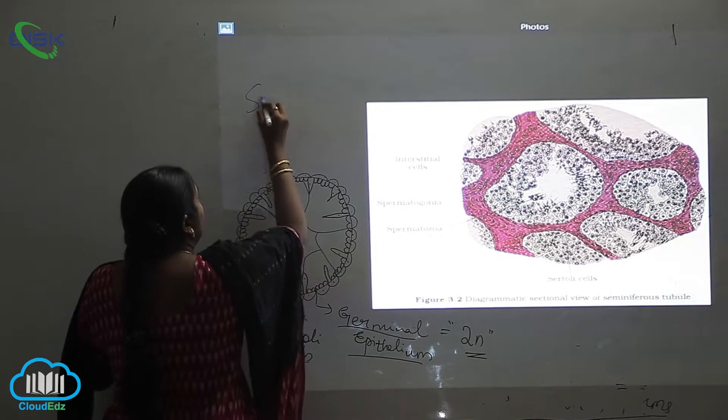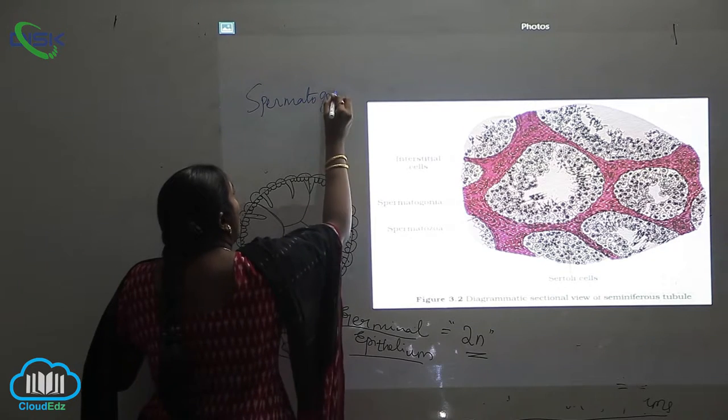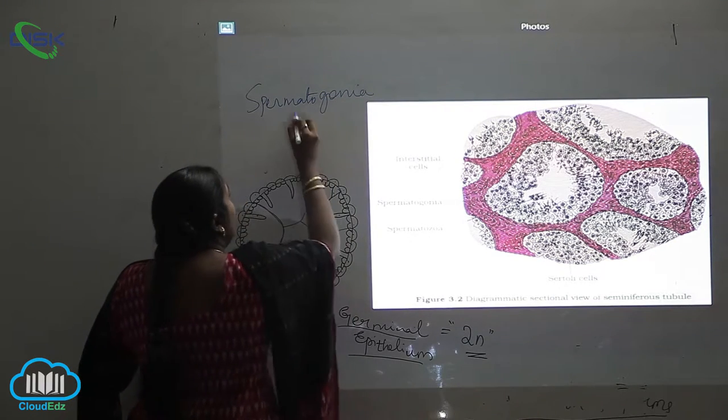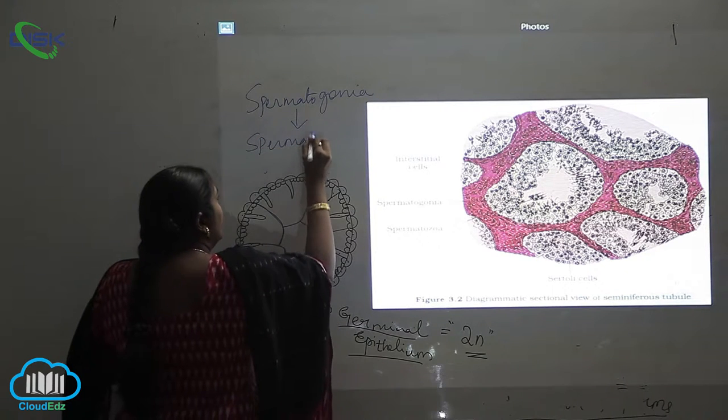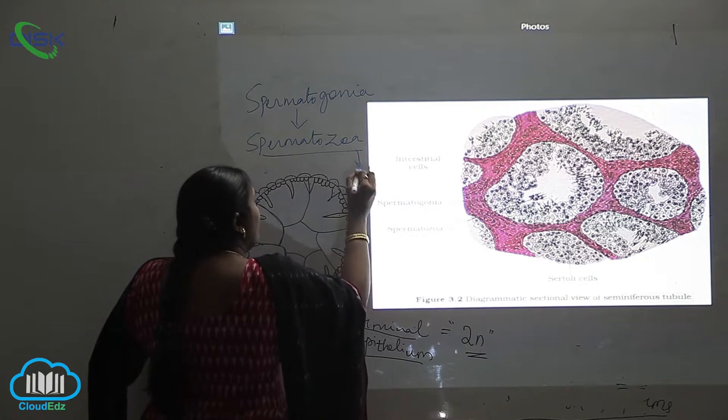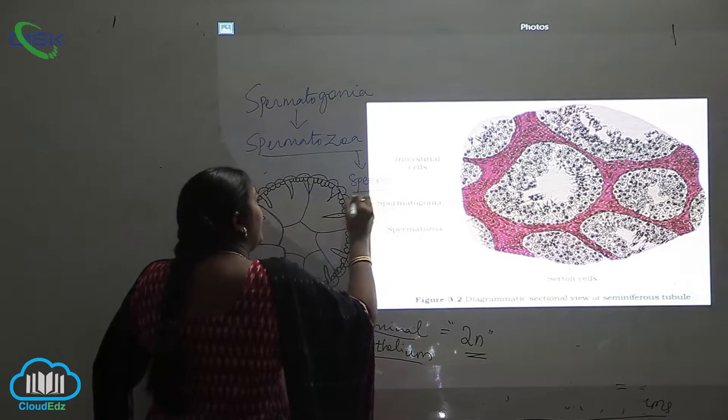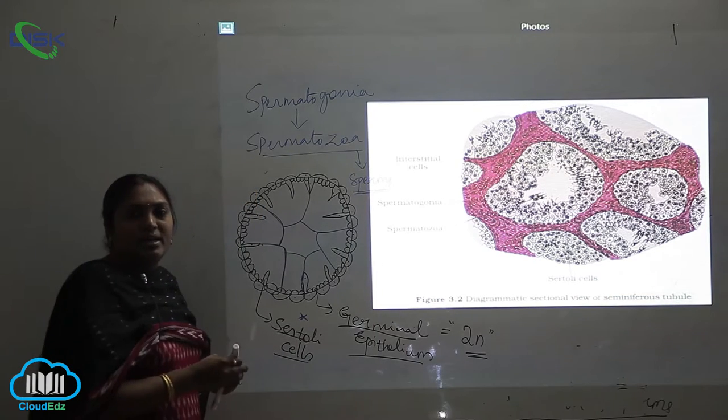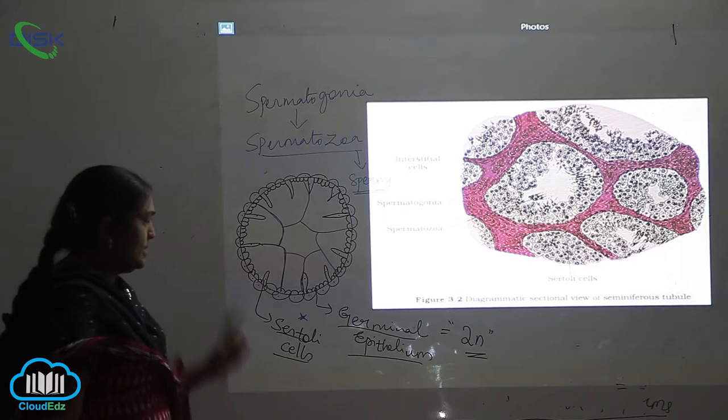Spermatogonia will be forming the spermatozoa, which ultimately forms the sperms. These are the ultimate products of reproduction in the male reproductive system.